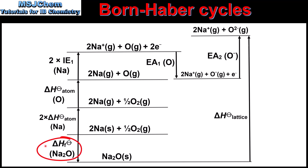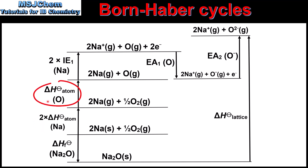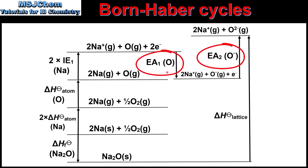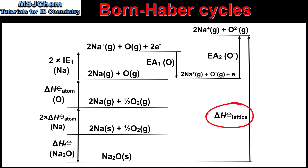Starting on the bottom left we have the enthalpy change of formation. Next we have the enthalpy of atomization of sodium. Note we will multiply this value by 2 because we need 2 moles of gaseous sodium atoms. Next we have the enthalpy of atomization of oxygen. Moving on we have 2 times the first ionization energy of sodium. On the right we have the first and second electron affinities of oxygen. And finally we have the lattice enthalpy of sodium oxide.